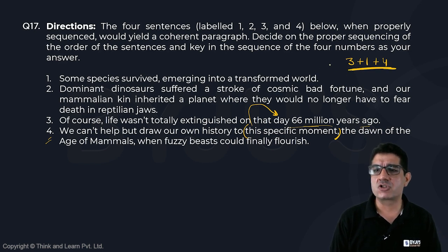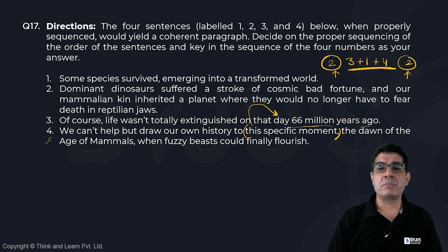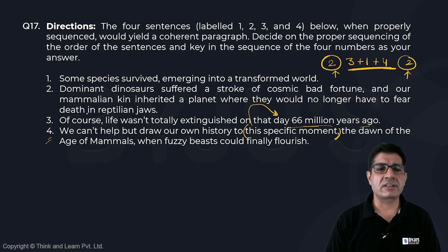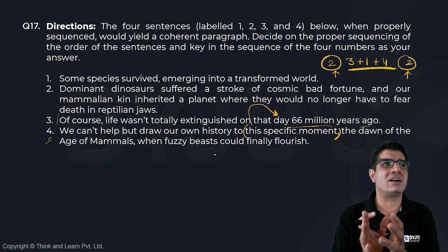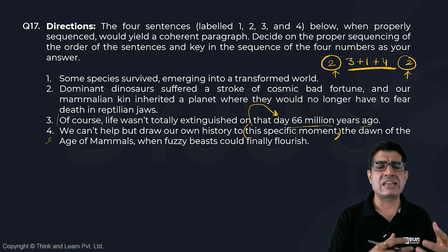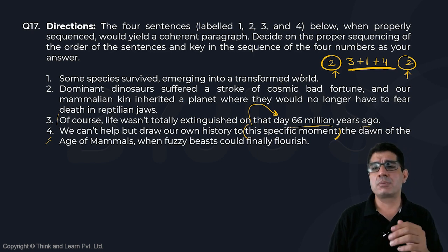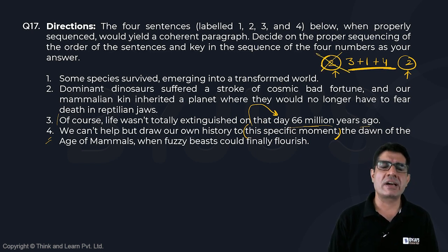That leaves sentence two, with two possible placements. If I put two at the beginning, it talks about dominant dinosaurs suffering a stroke of cosmic bad fortune and our mammalian kin inheriting a planet where they would no longer fear death in reptilian jaws. Immediately after, three starts with 'of course, life was not totally extinguished.' But the idea that life was not totally extinguished is already established in two, so putting two before three gives us no justification for 'of course' or the idea that follows. So that won't work, and the only other place is three, one, four, two.